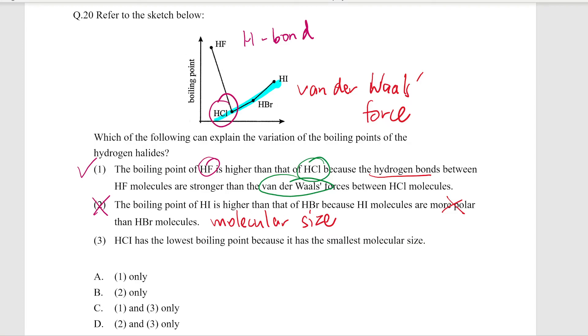But don't forget, actually the smallest molecular size belongs to HF. Hydrogen fluoride has the smallest molecular size, but because of this hydrogen bond, its boiling point rises up. This is a trick question—don't get tricked by this. The answer for this is A.